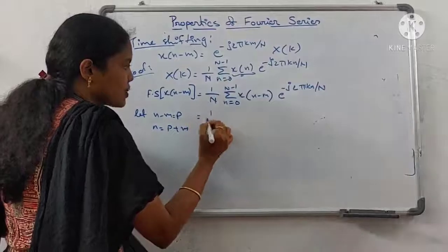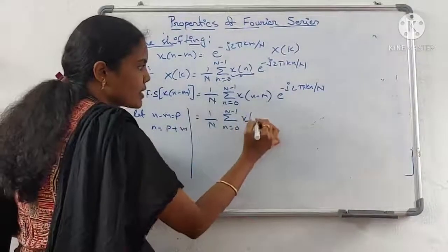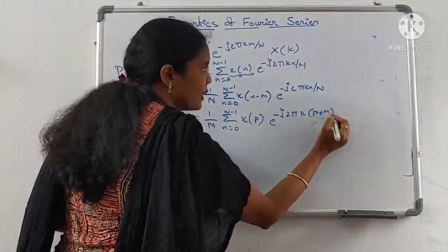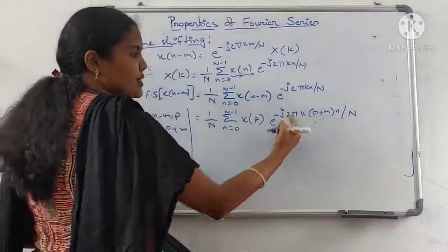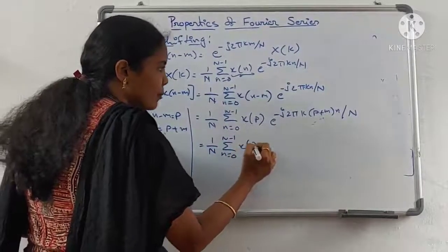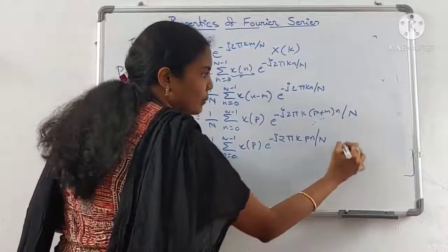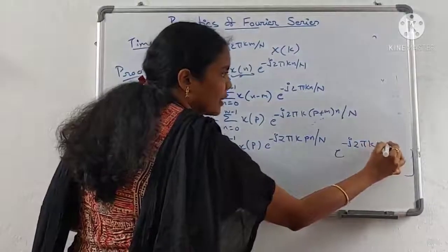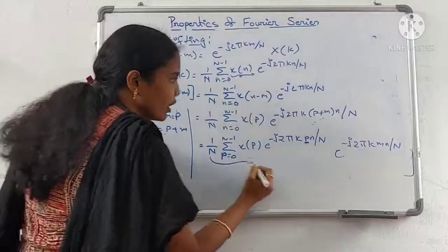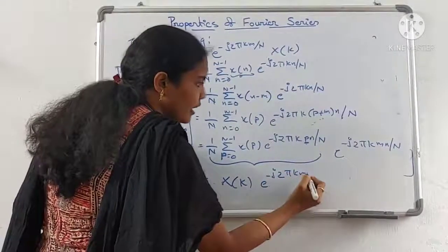Substitute: that is 1/N summation from n=0 to N-1, where x(n minus m) is replaced by x(p), and in place of n, substitute p plus m into the exponent, giving e^(minus j 2 pi k (p plus m) / N). Separating the exponent: 1/N summation from p=0 to N-1 of x(p) e^(minus j 2 pi k p / N) into e^(minus j 2 pi k m / N), which is nothing but X(k) e^(minus j 2 pi k m / N).